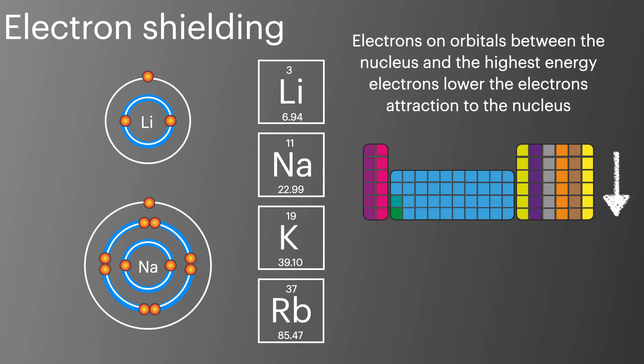Changing orbitals also provides some shielding. So p orbitals are shielded more from the nucleus than s orbitals. As the electron shielding increases the ionisation energy decreases.